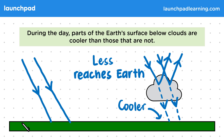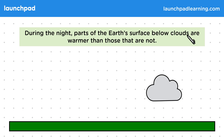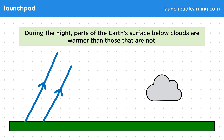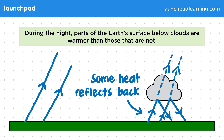But what about at night time, when there are no waves from the Sun reaching this part of the Earth? During the night, parts of the Earth's surface below clouds are warmer than those that are not. Remember that the Earth is heated by infrared waves from the Sun, and cools itself down by releasing energy as waves. During the day it both gains and loses heat, while at night it will only lose heat. If there are no clouds, then the waves the Earth emits are free to escape into space. However, when there are clouds, the waves will need to pass through them. They only partially transmit through the clouds, meaning they will be partially reflected back down towards the Earth's surface. This means that some of the heat the Earth released is reflected back down to it. As a result, this part of the Earth's surface under the clouds will be warmer than this area under a clear sky.